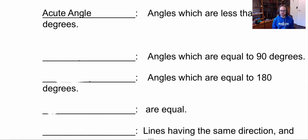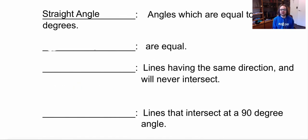Now we have angles which are equal to 90 degrees. So if it's equal to 90 degrees that's going to be a right angle. Then we're going to look at angles which are equal to 180. If it's equal to 180 it's going to be a straight angle. Next if two angles are equal they are going to be one term we learned is opposite and we're going to get to that later when we get some examples.